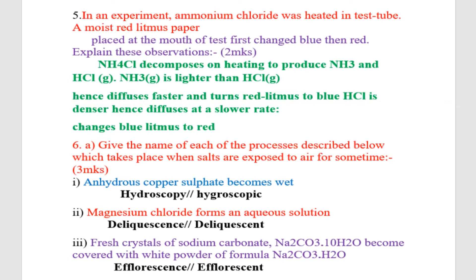Question six: Name the process which takes place when salts are exposed to air. Roman one: Anhydrous copper sulfate becomes wet — that process is called hygroscopic. Roman two: Magnesium chloride forms an aqueous solution — that process is called deliquescent. Roman three: Fresh crystals of sodium carbonate become covered with white powder — that process is called efflorescence.